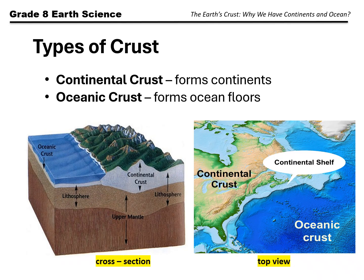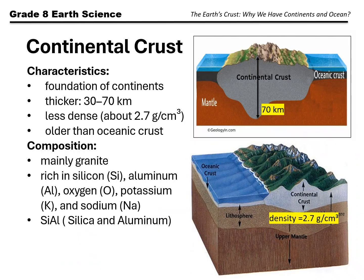The Earth's crust isn't the same everywhere. Some parts form landmasses — that's the continental crust — and others form the ocean floor — that's the oceanic crust. The continental crust is the foundation that supports human settlements, forests, and ecosystems, because it is elevated above sea level. Asia is an example, along with other large landmasses.